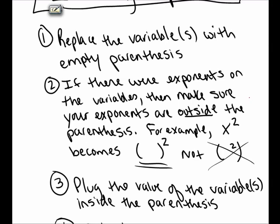If there are exponents on your variables, you have to make sure that you put those exponents on the outside of the parentheses. For example, if you start with x squared, you'll remove the x, replace it with empty parentheses — it's empty parentheses squared. You do not put that square inside the parentheses.